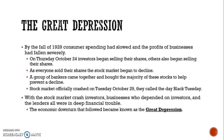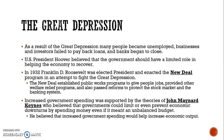A group of bankers in the United States decided to buy the majority of stocks to try to prevent a further decline, but it wasn't enough. The stock market officially crashed on Tuesday, October 29th — which they called Black Tuesday. With the stock market crash, investors and businesses that had depended on lenders were in deep financial trouble. This economic downturn became known as the Great Depression. The Great Depression had a big effect on the American people — many people were unemployed, businesses started to fail, and banks began to close.